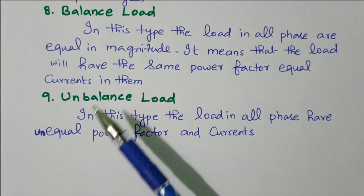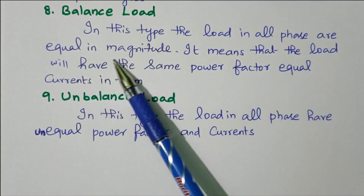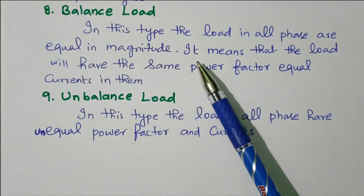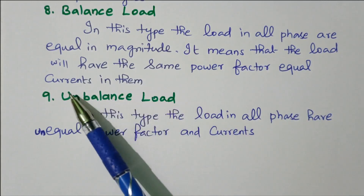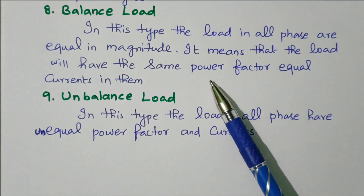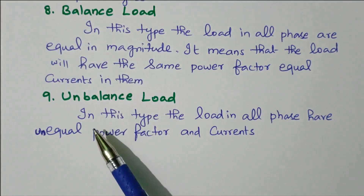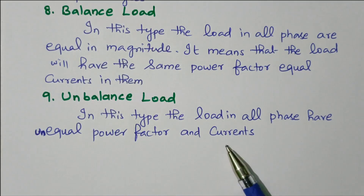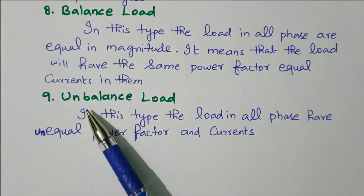Balanced load: the load in all phases is equal in magnitude, meaning the load will have the same power factor and equal current drawn. Unbalanced load: the load in all phases has unequal power factor and unequal current.